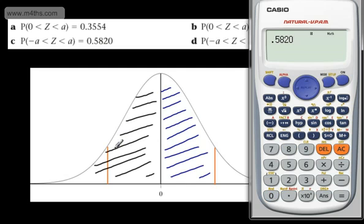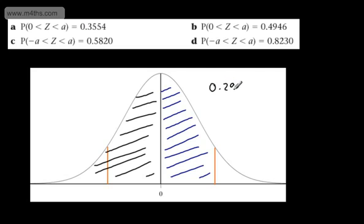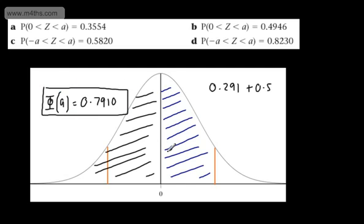So 0.5820. This is the area in total between this line and this line. If I divide this by 2, what I'm going to end up now with is the area trapped under the curve to the right. So all I'm going to do now is 0.291 plus 0.5. Therefore, what I'm doing is finding phi of A being equal to these two things added, which is going to give me 0.791. Okay, so that's going to be 0.7910.